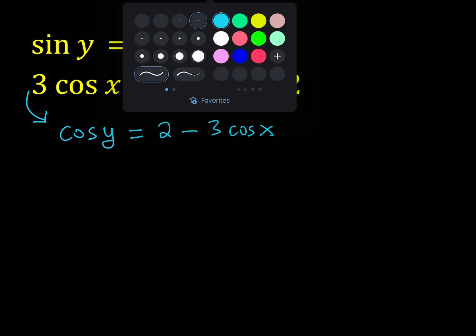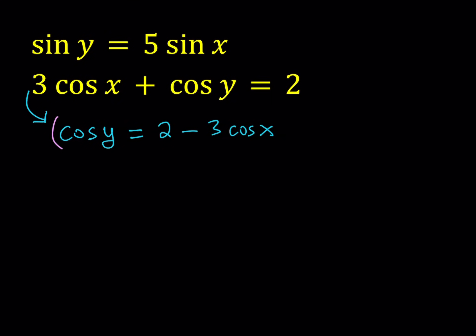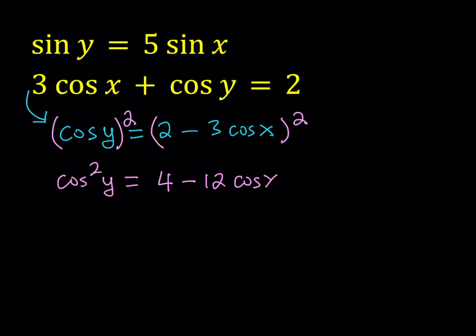And then I'll square both sides. That gives me cosine squared y equals — that's a minus b quantity squared — 4 minus 12 cosine x plus 9 cosine squared x.